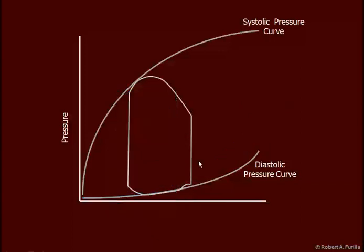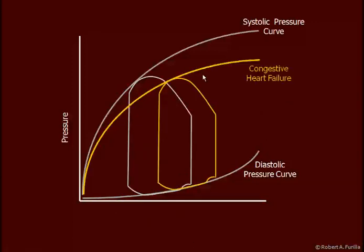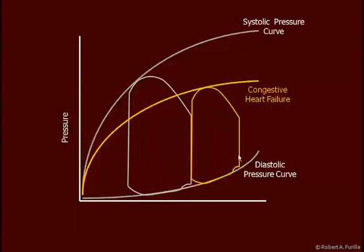Looking again at the heart failure case, we saw a decrease in the systolic pressure curve associated with congestive heart failure, but a fairly normal stroke volume and blood pressure. If this continues, however, we see a rising up on the diastolic curve and coming down on the systolic curve — this individual is no longer able to maintain arterial blood pressure and stroke volume.